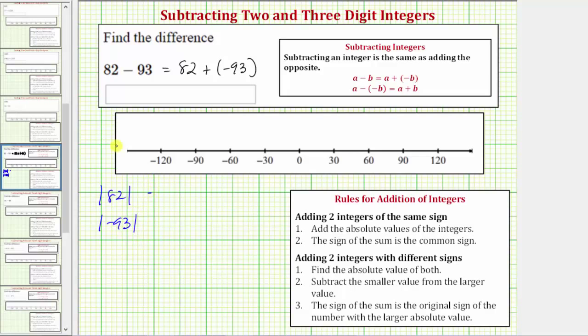The absolute value of a number is a number's distance from zero and distance is always positive. Therefore the absolute value of positive 82 is positive 82. The absolute value of negative 93 is positive 93.